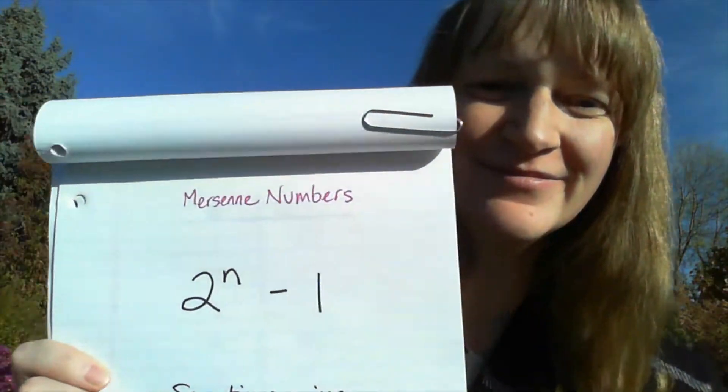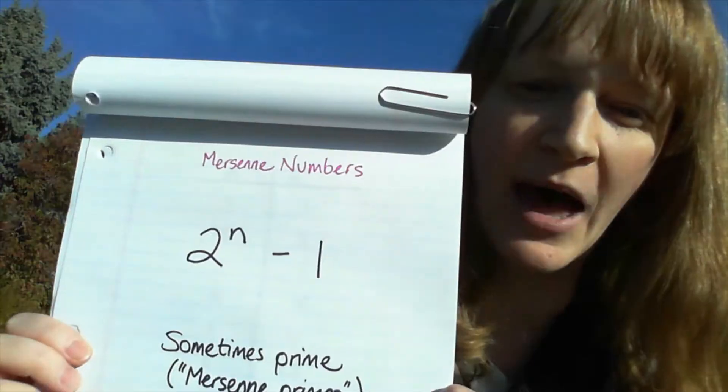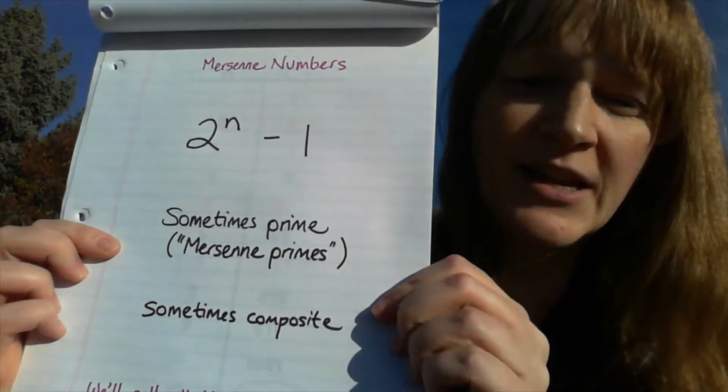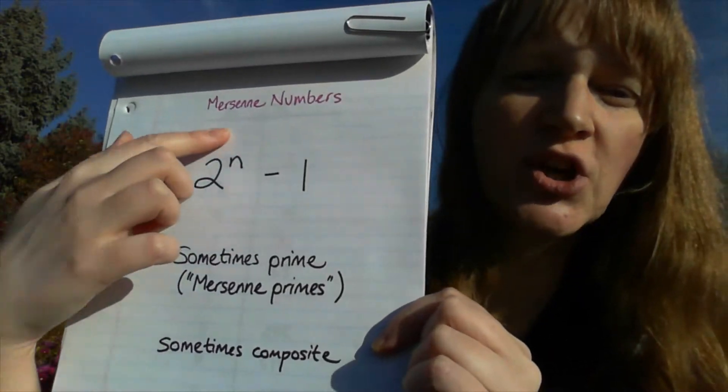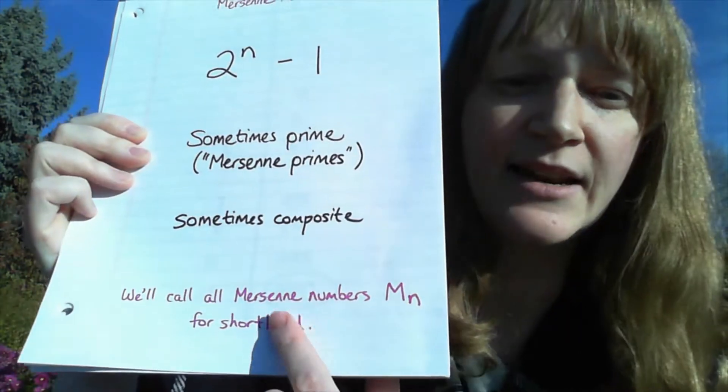What are Mersenne numbers? Here is a quick recap. These are numbers which are one less than a power of two. Sometimes they're prime, and those are called Mersenne primes. Sometimes they're composite. We'll just call all of the numbers that are of this form Mersenne numbers.